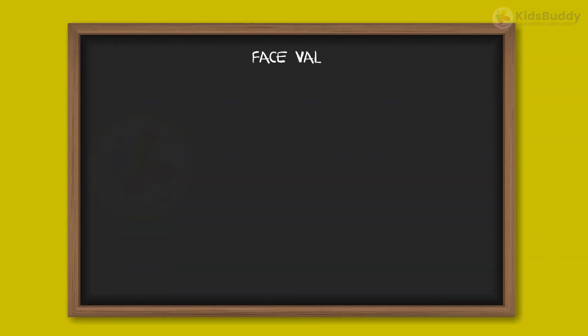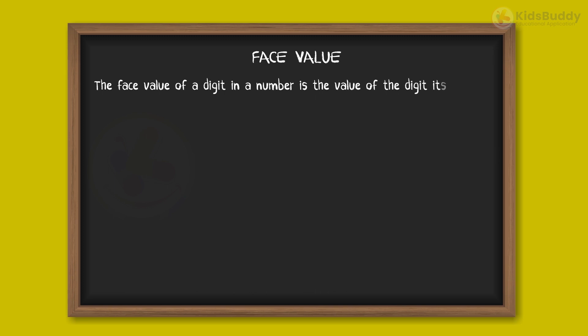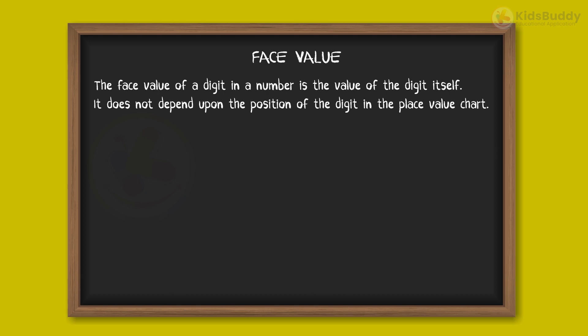Now let us understand about the face value of a digit. The face value of a digit in a number is the value of the digit itself. It does not depend upon the position of the digit in the place value chart.